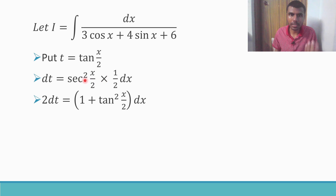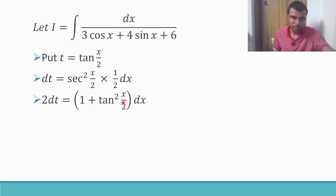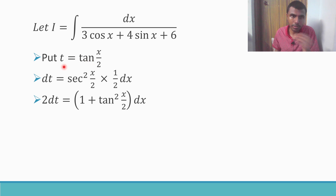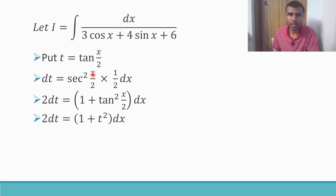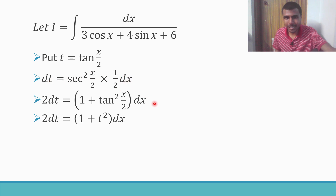Now secant squared x equals 1 + tan²x, so secant squared(x/2) is 1 + tan²(x/2). Sending the 2 to the left-hand side, I get 2dt. Since tan(x/2) = t, I get 2dt = (1 + t²)dx, so dx = 2dt/(1 + t²).